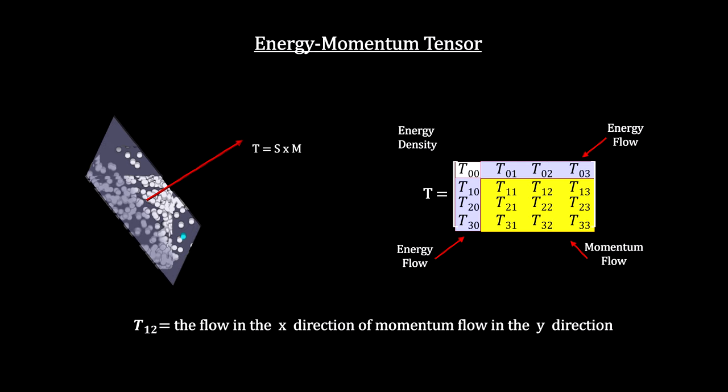The rest are momentum flows across surfaces. For example, T12 keeps track of the flow in the x-direction of momentum in the y-direction. These are caused by pressure and stress at each surface.